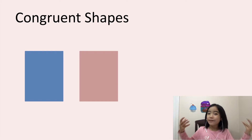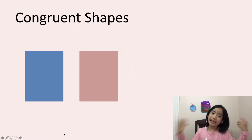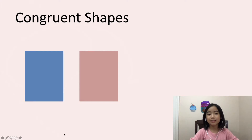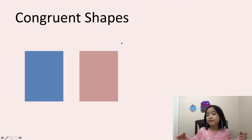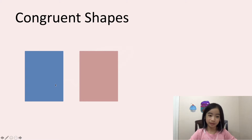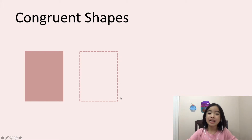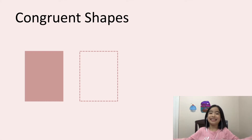Let's do a few examples. Here are two figures. Are they congruent shapes? Well, they're both rectangles. And if I slide the pink rectangle on top of the blue rectangle, it matches perfectly. So these two rectangles are congruent shapes.